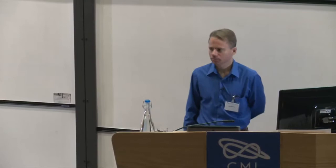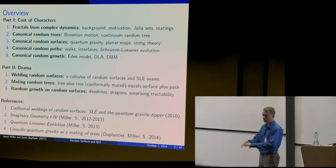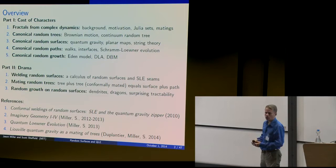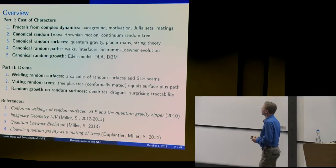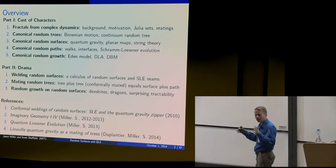Thank you very much. It's very good to be here. I'm going to start by going over what I call the cast of characters. First, some fractals from complex dynamics — Julia sets and things of that sort. I'll talk about how they became popular and show some images. Then I'll discuss how we can use some ideas that evolved in the theory of complex dynamics to study certain canonical random fractals that have been important in the statistical physics and quantum field theory literatures over the last few decades. These include canonical random trees — the most natural way to choose a random tree — and canonical random surfaces.